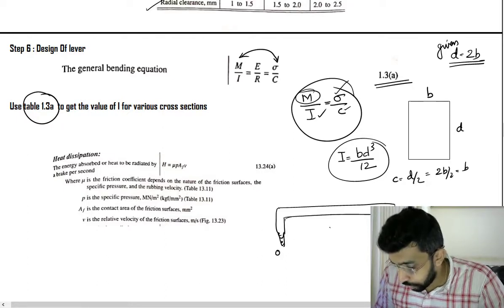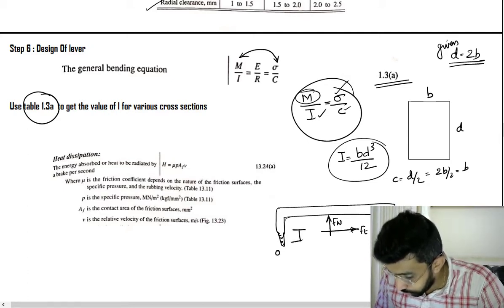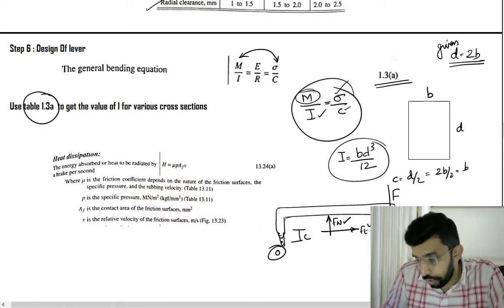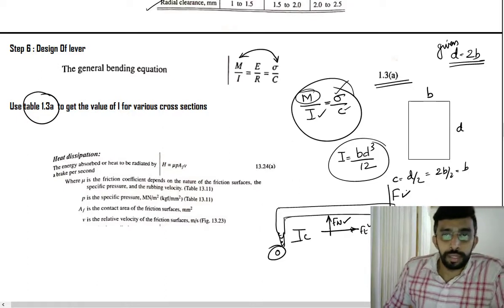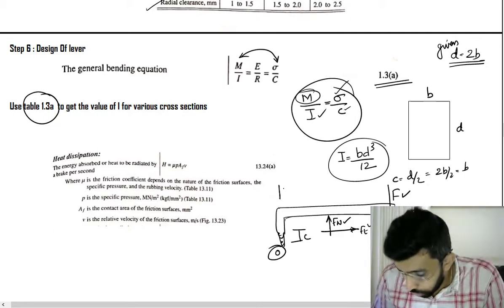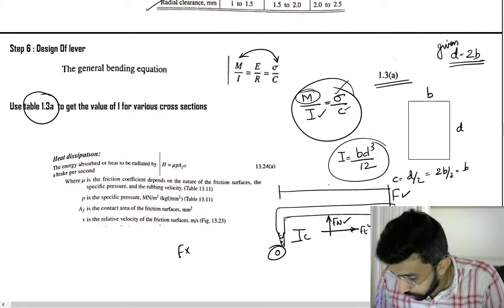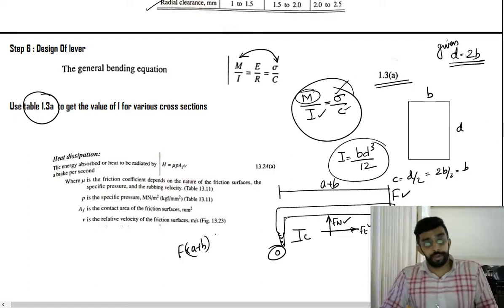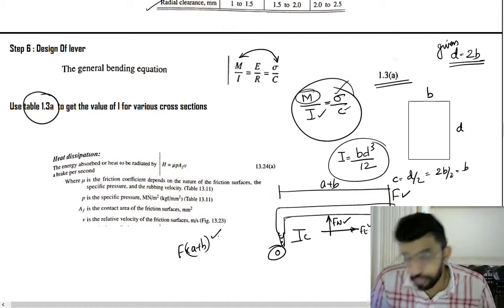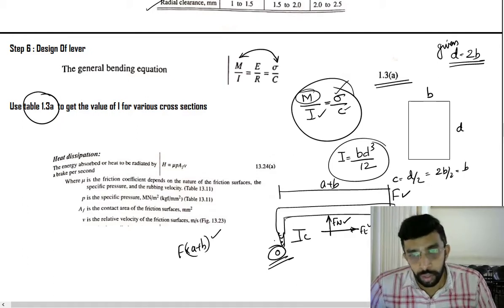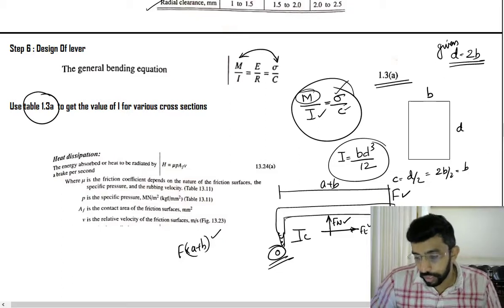To find the bending moment M, solve the lever by taking moments about point O, considering forces FN, FT, and actuating force F with their respective distances. If you multiply F by the total distance (A + B) instead, that is also acceptable but not accurate — it provides an additional factor of safety. The accurate method is to take moments about O considering FN and FT. The unknown will be B; solve for B to complete the lever design.